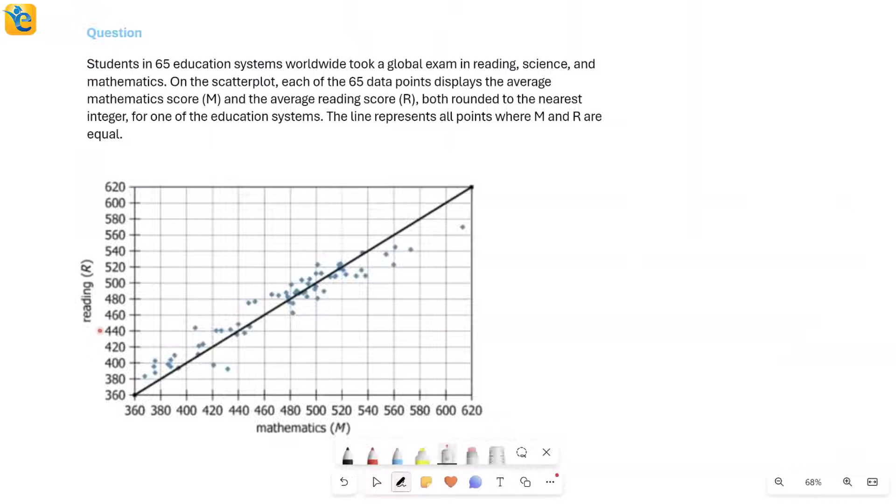Let's solve this question. We are talking here about 65 education systems. Now students in all 65 of these systems took a global exam. That global exam was in reading, science, and mathematics.